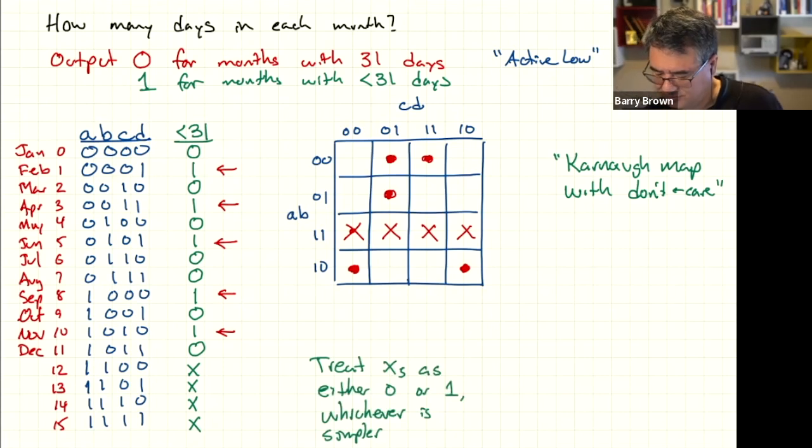So when we go and circle our dots, we've got a pair here. And then for this dot here, we could either pair it up with the one above it, or we could pair it with the x below it and treat that x as though there was a dot there. Now, I think it's more interesting if we circle it with the dot above it.